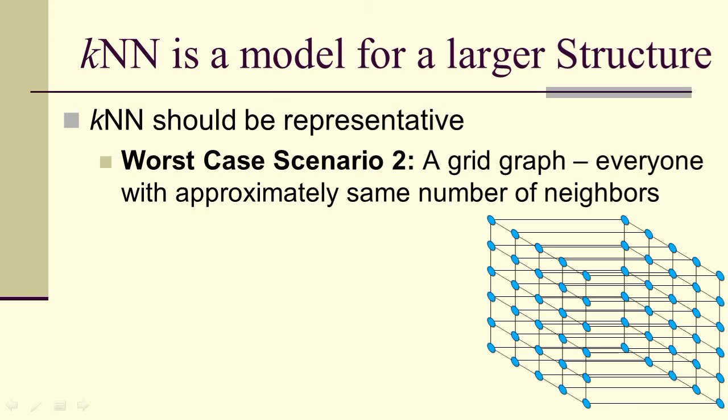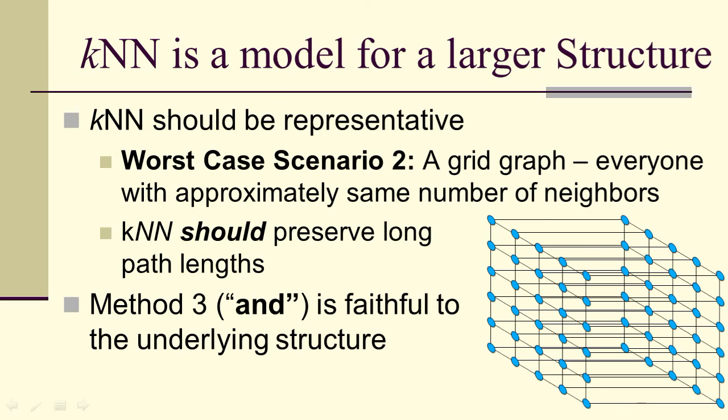Now what about another worst case scenario, a grid graph? Here, everyone has approximately the same number of neighbors. But notice the way we have it set up, from one side of the grid to the other, as the grid becomes large, the distance across the grid also becomes very large. The shortest average path length is going to grow as the grid grows in size. Therefore, our K nearest neighbor's algorithm should create a sampling of this structure that has some long path lengths. And it does, if we use the AND option.